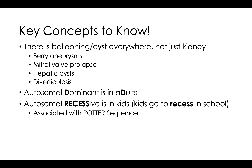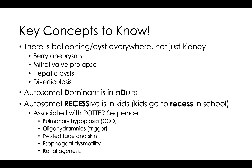Another super high yield topic is that autosomal recessive PKD is associated with Potter's sequence, and knowing the different parts of Potter's sequence was pretty important. The one they love to ask about is pulmonary hypoplasia, which occurs because of oligohydramnios. The two T's in Potter's sequence are twisted skin and twisted face, and it also involves esophageal dysmotility and renal agenesis — or if there is a kidney, it'll have cysts.